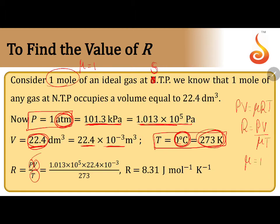Remaining values like P, V, and T, all of them are given. Value of P is here, value of V is here, value of T is here. This is the unit for R that you are going to get.